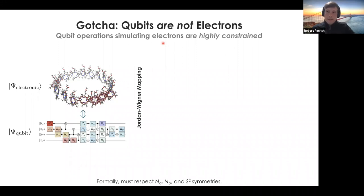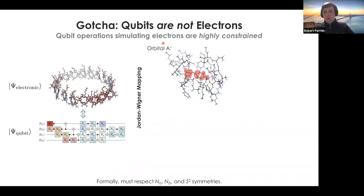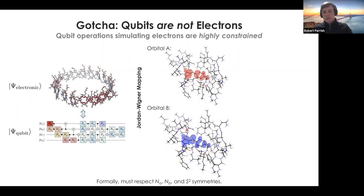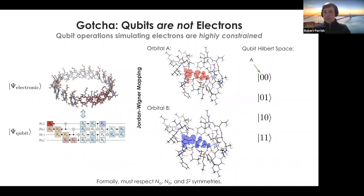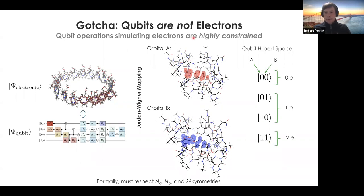The most common mapping is called the Jordan-Wigner mapping. We have concepts called orbitals — basically shapes placed around the molecule that can either have an electron in them or not. In the Jordan-Wigner mapping, qubit A represents orbital A: zero state means no electron there, one state means there is an electron. So examining the Hilbert space of the qubits, the state zero-zero represents no electron in either orbital A or B, the next two represent one electron in one or the other, and the last represents two electrons — one in each orbital.